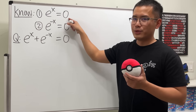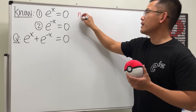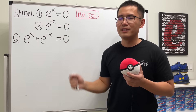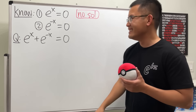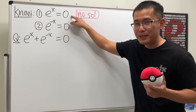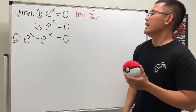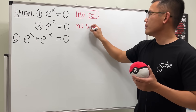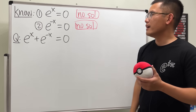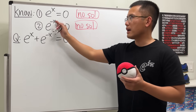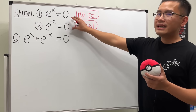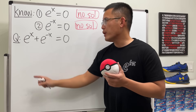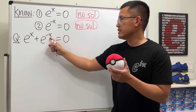For the third example: e^x = 0 has no solution — not even complex solutions. Please do not say negative infinity, because negative infinity is not a number. Similarly, e^(-x) = 0 also has no solution — not even complex. Now, what if we add them up? We're looking at e^x + e^(-x) = 0.